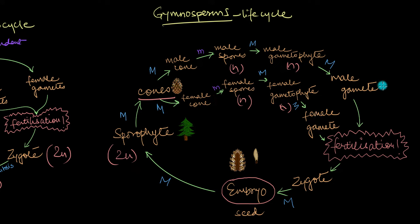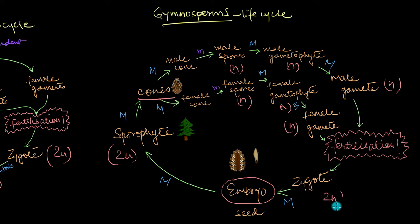The male gametophyte with the male gamete is transferred inside the female cone, where the male and female gametes come in contact, fuse, and undergo fertilization. The male and female gametes are haploid, and fertilization produces a diploid zygote. This zygote develops into an embryo encased inside a seed, which is also diploid.